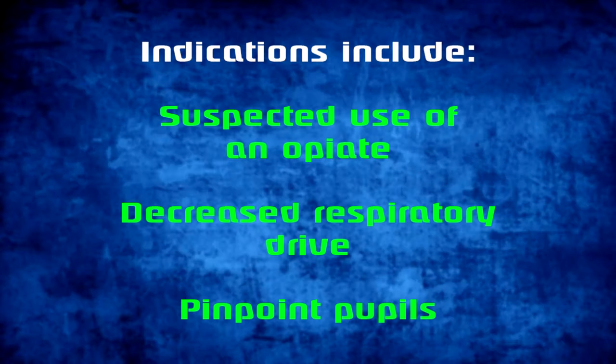Indications for the use of naloxone are the suspected use of an opiate in an overdose, decreased respiratory drive, and pinpoint pupils. There are no clear contraindications unless the patient is allergic to naloxone and you have knowledge of this allergy prior to administration. Studies have shown no harsh effects to the human body if given when there is no opiate overdose present.